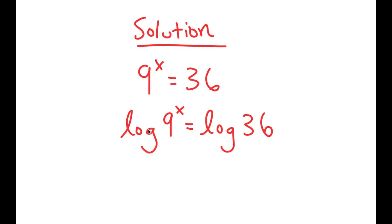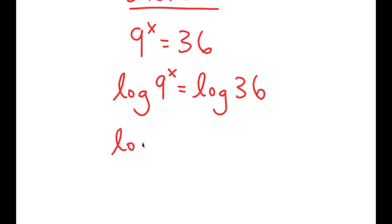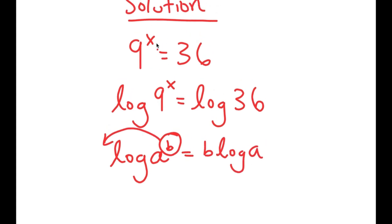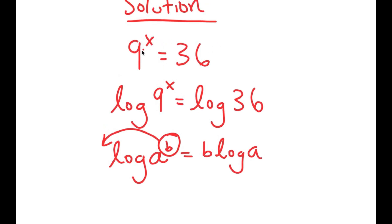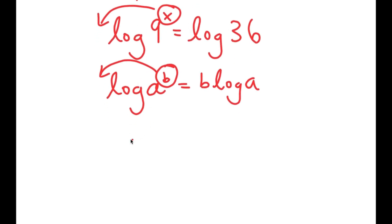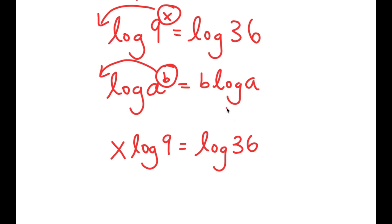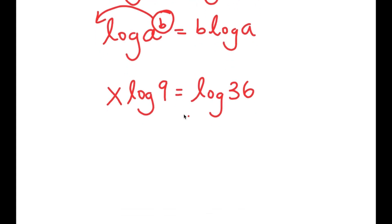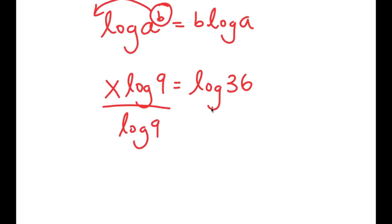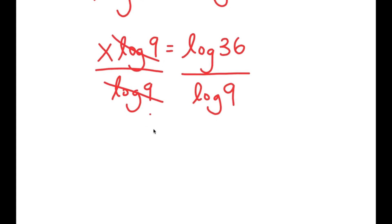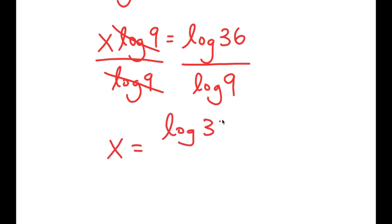The reason I used logarithms is because of the property that if I have log of a to the power of b, I can move the exponent b to the front, giving b times log a. Before, x was an exponent and was almost impossible to isolate, but now we can move x to the front. So I get x times log 9 is equal to log 36. To isolate x, I divide both sides by log 9, and I get x is equal to log 36 over log 9.